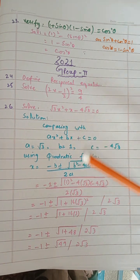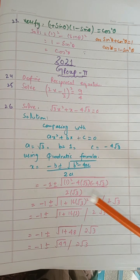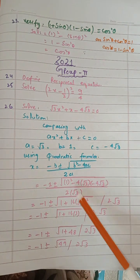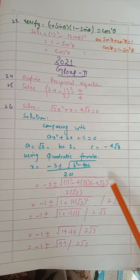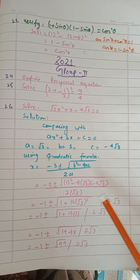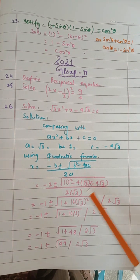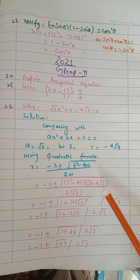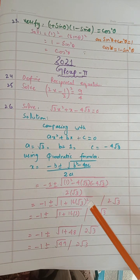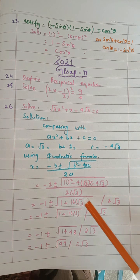Now substitute the values one by one. The most important thing is to focus here. When you multiply them: minus minus is plus. 4 times 4 is 16. Under the root, because it is written two times, you have to take the square — so it will cancel from the square root.